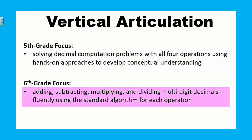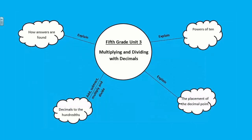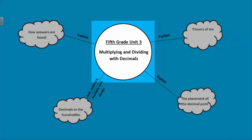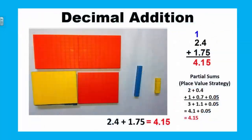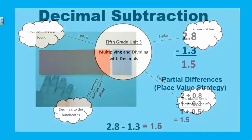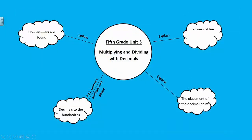At the sixth grade level, students focus on fluently adding, subtracting, multiplying, and dividing multi-digit decimals using the standard algorithm for each operation. While students will continue to work with all four operations with decimals in this unit, the primary focus is on multiplication and division since students learned about decimal addition and subtraction in Unit 2. For more information about decimal addition and subtraction, please review the Grade 5, Unit 2 video. Let's start this segment by investigating the meaning of decimal multiplication.